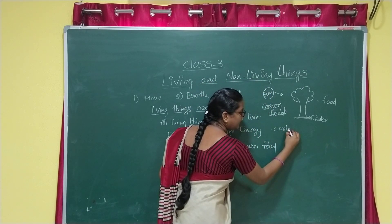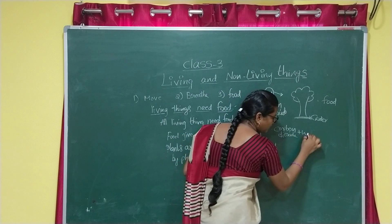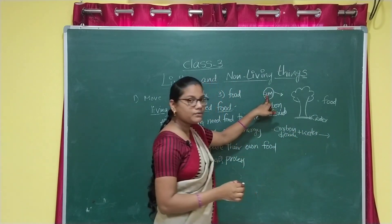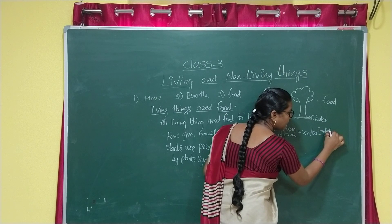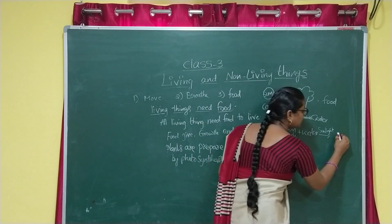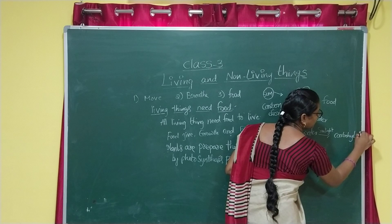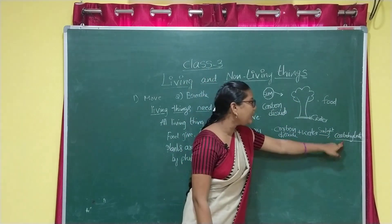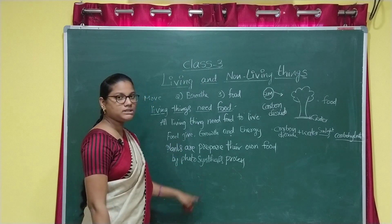Carbon dioxide plus water, combined in the presence of sunlight and chlorophyll, to get carbohydrate. This carbohydrate is food for plants. This process is known as photosynthesis.